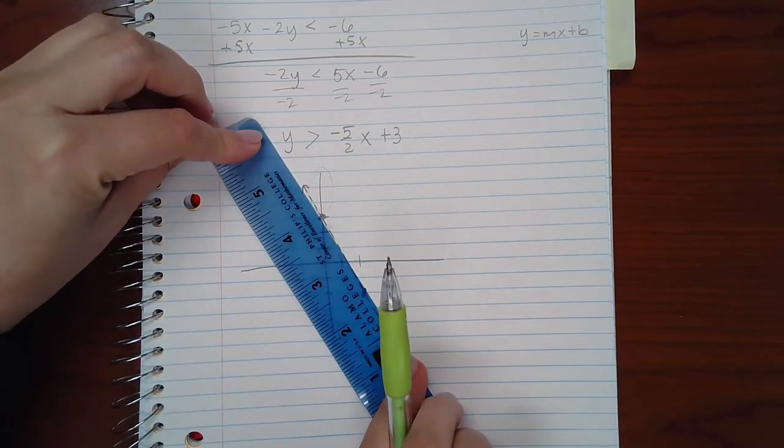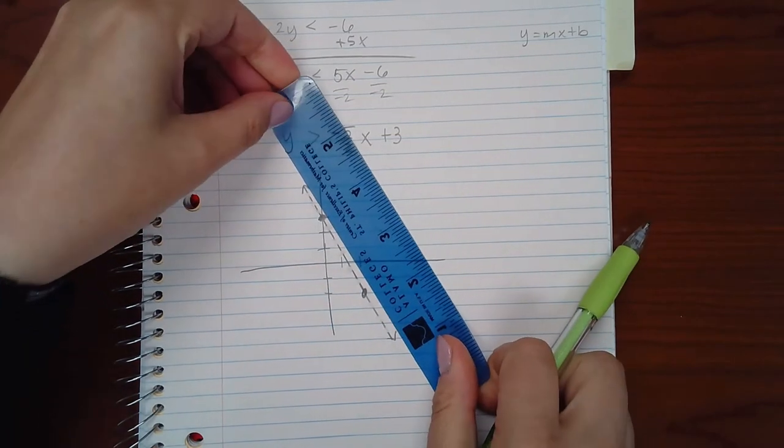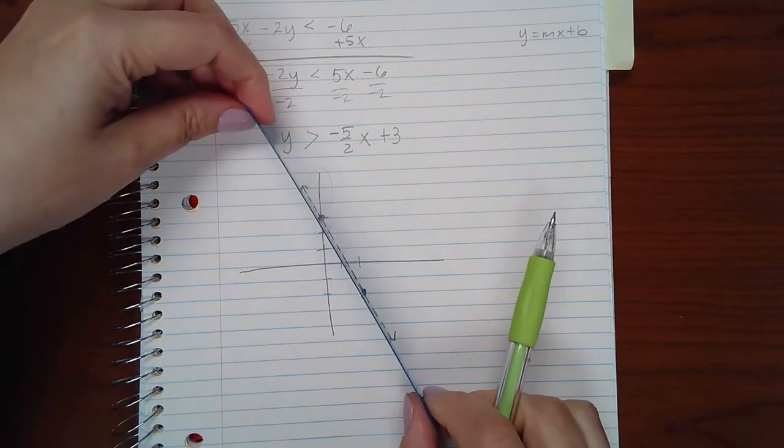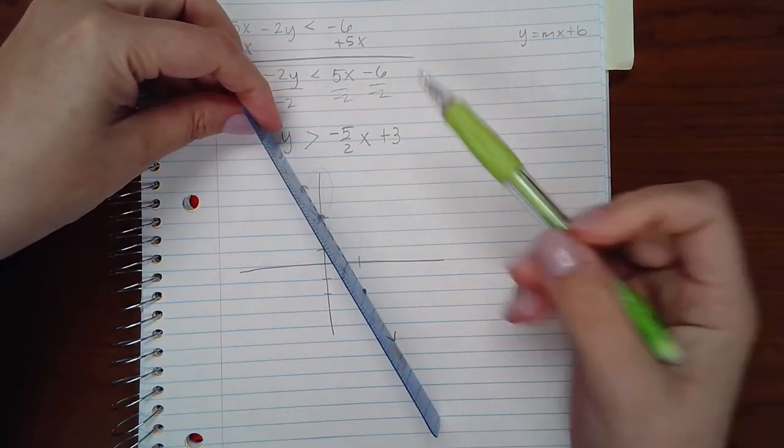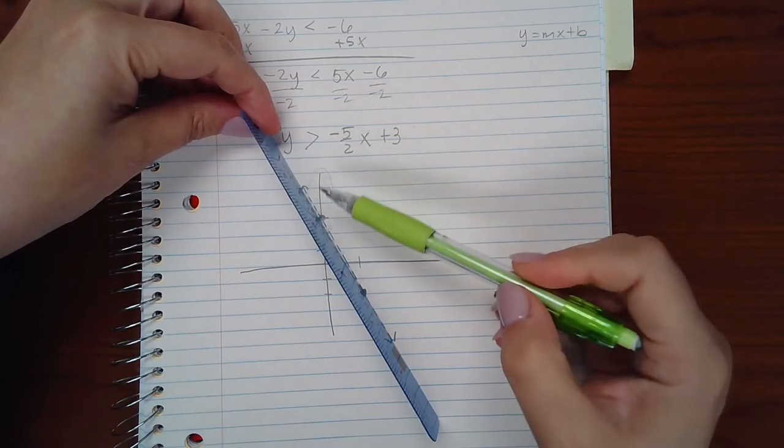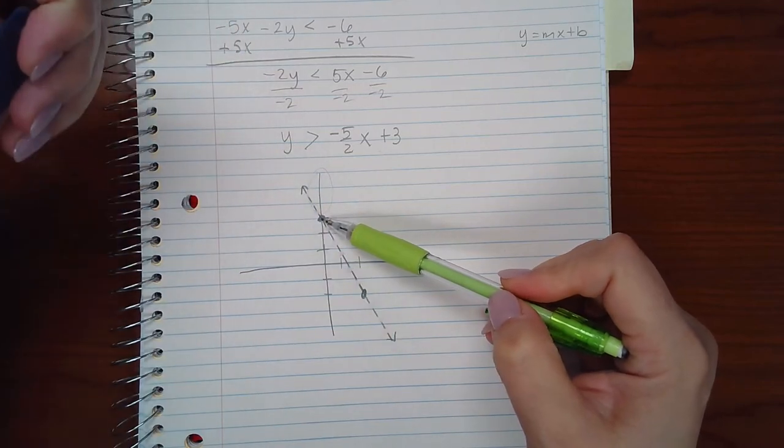This is the line here. You only have this side where the ruler is or you have this side where the ruler is. Those are the two sides of the line. Which side am I going to shade if it's telling me where y is greater than this line?